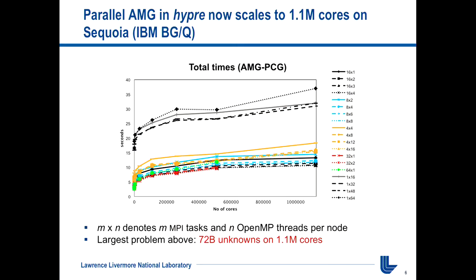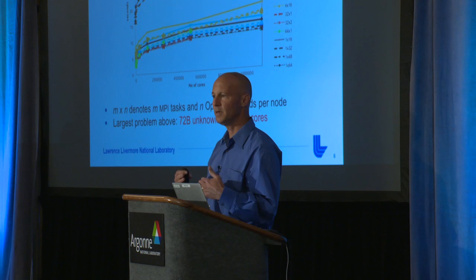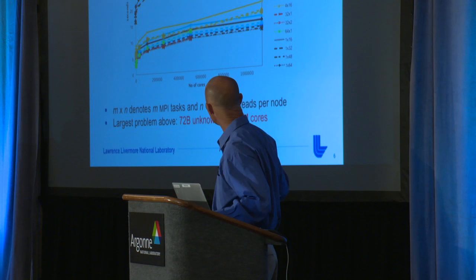Here's an example of its scaling. It takes a lot of work and research and algorithmic changes to get to this point. This is a weak scaling plot of our BoomerAMG solver all the way out to 1.1 million cores — about 72 billion unknowns in our largest problem here. The different lines have to do with different combinations of OpenMP threads and MPI tasks, and you can see it scales pretty nicely.